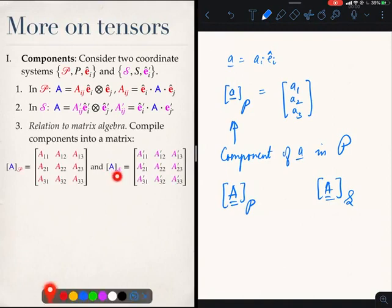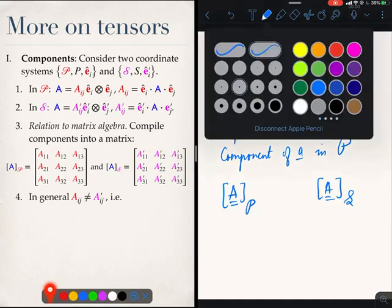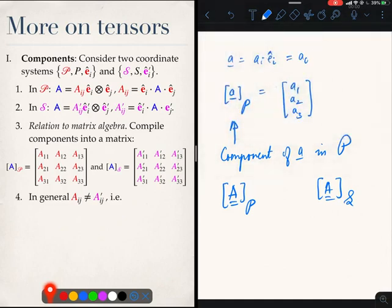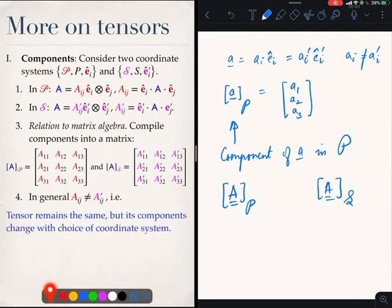In general, these components are not the same. A11 has no need to be the same as A11 prime, just like if I was to write ai prime, then ai and ai prime need not be the same. But the tensor just like the vector remains the same, its components change with the choice of the coordinate system. That is an important message.